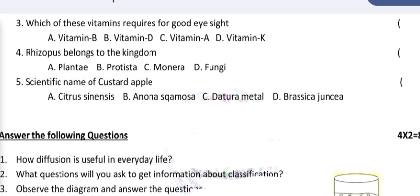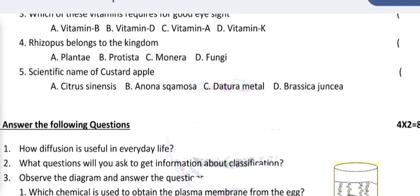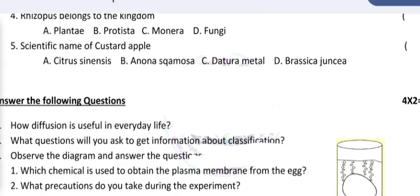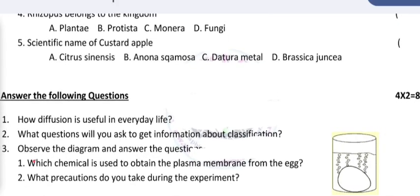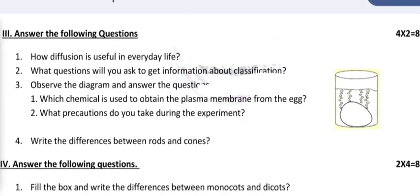Rhizopus belongs to the kingdom: plantae, protista, monera, and fungi. Which one is correct? You can write it. Scientific name of custard apple. Here four options are given. You can select the one and write it in the space provided.